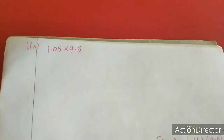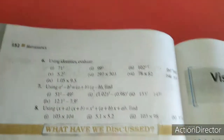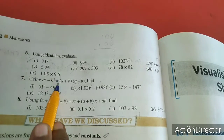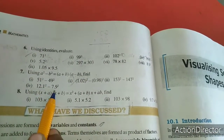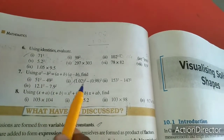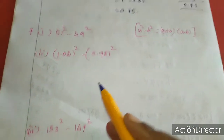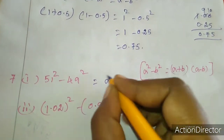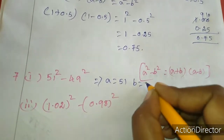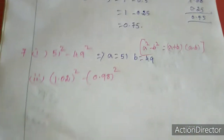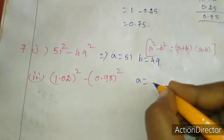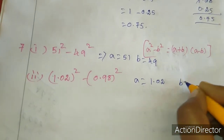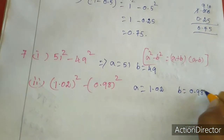Now we move to the 7th sum, using the identity a squared minus b squared equals a plus b times a minus b. The first sub-sum uses this formula with a value 51 and b value 49. The second sub-sum has a value 1.02 and b value 0.98, so we substitute into the formula.